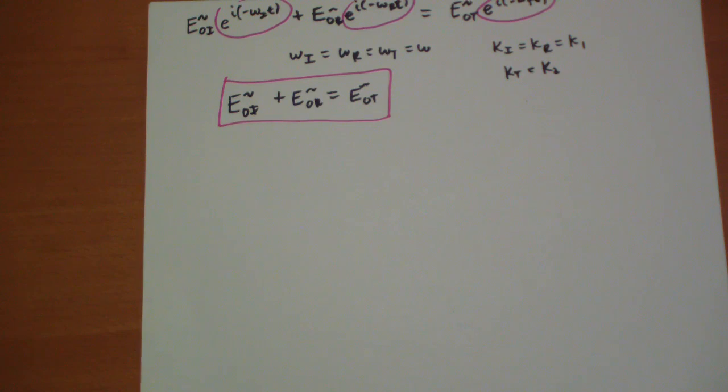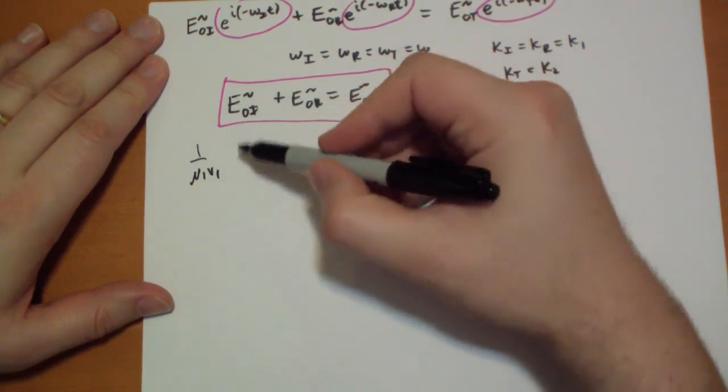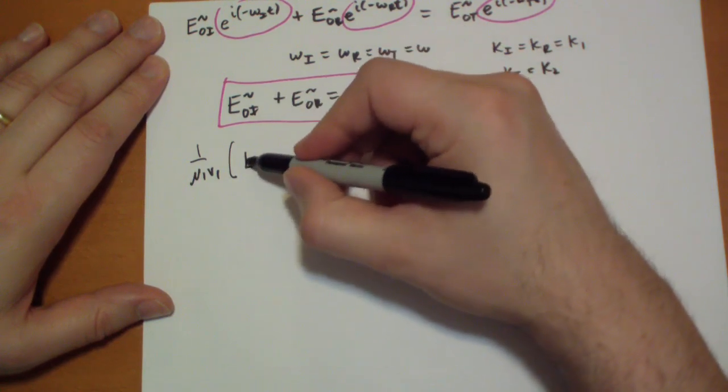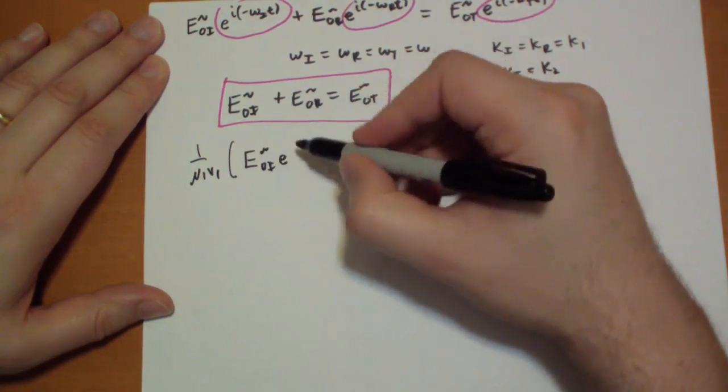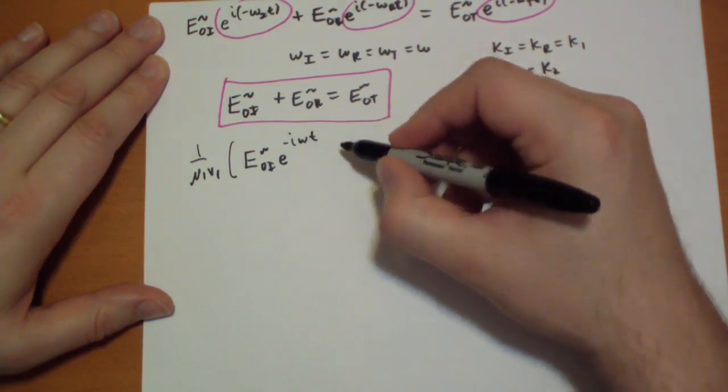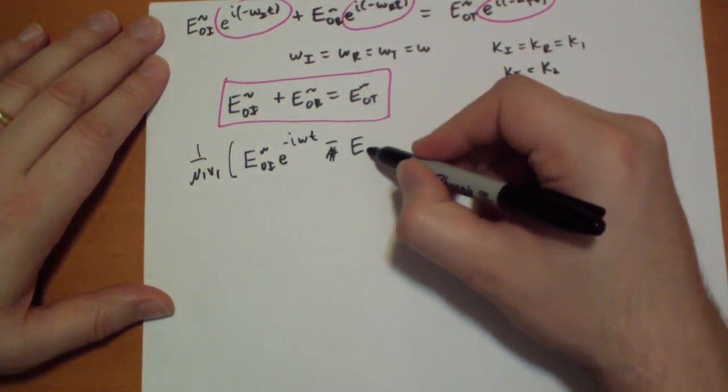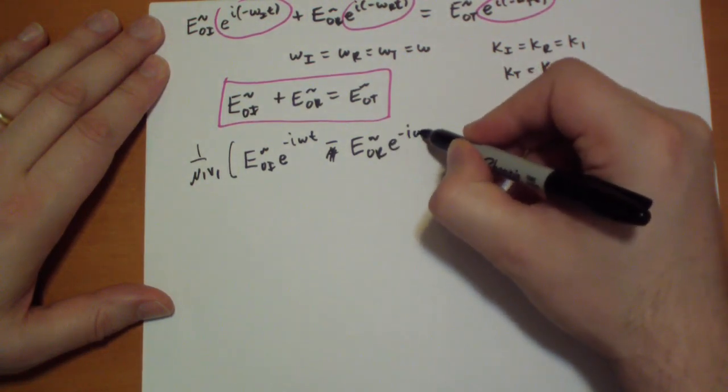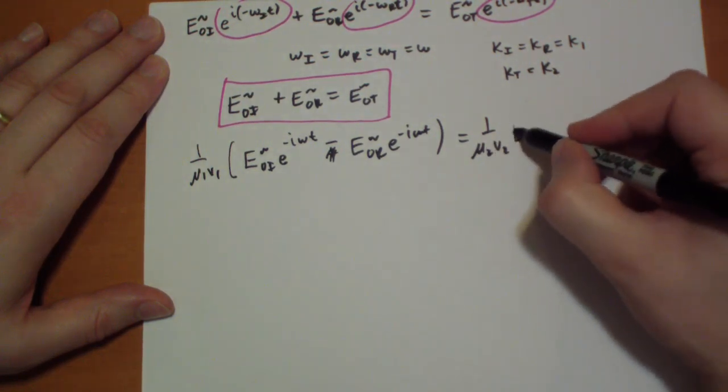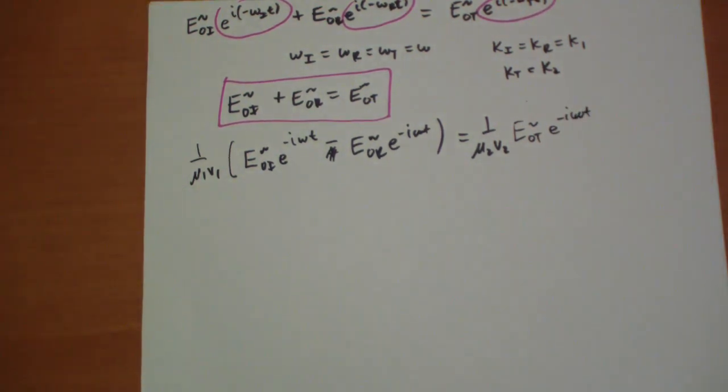For the B-fields, we get this equation. We get 1 over mu 1 V1, then we have E naught i complex e to the i minus i omega t, plus, no it's a minus because the reflective points in the opposite direction, minus E naught r complex e to the minus i omega t has to equal 1 over mu 2 V2 E naught t complex e to the minus i omega t.